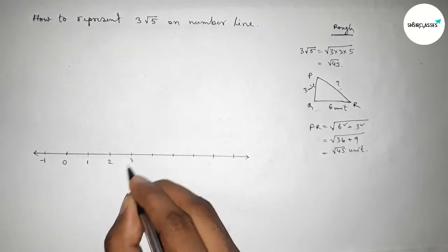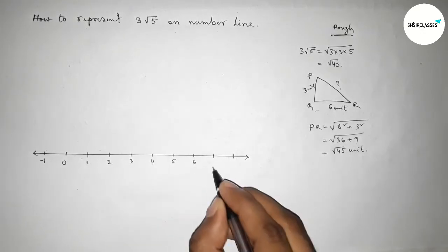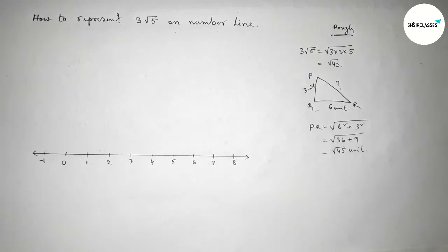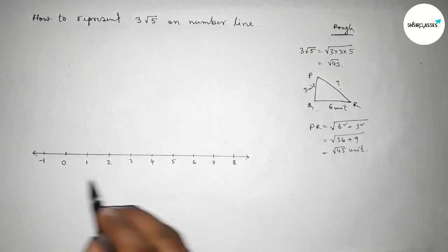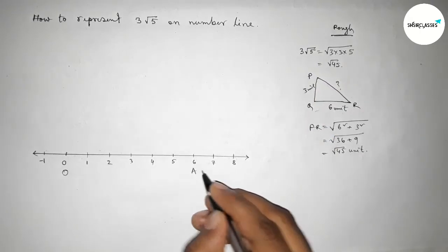First marking the numbers: point minus 1, 1, 2, 3, 4, 5, 6, 7, 8. Now applying this concept between 0 to 6, so taking O point and here A point.